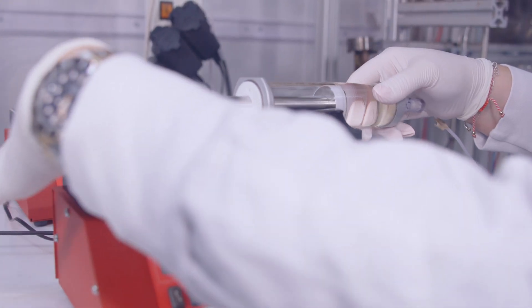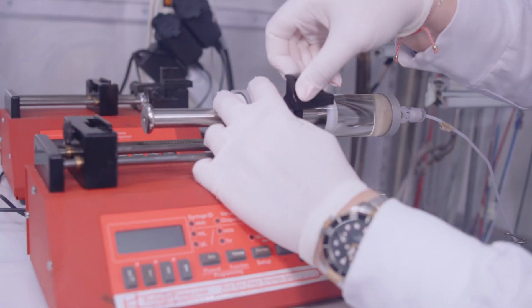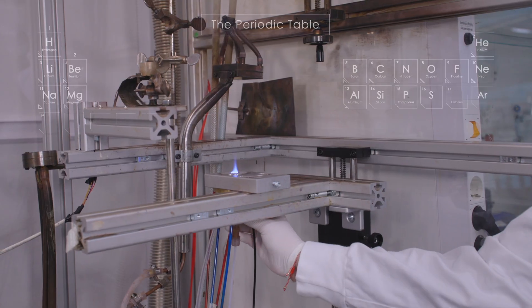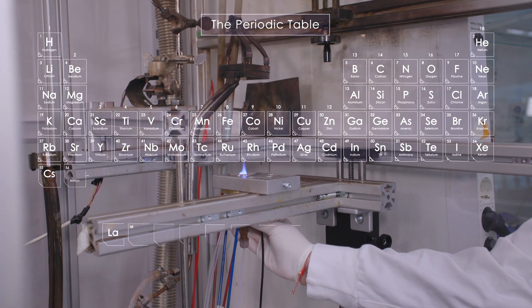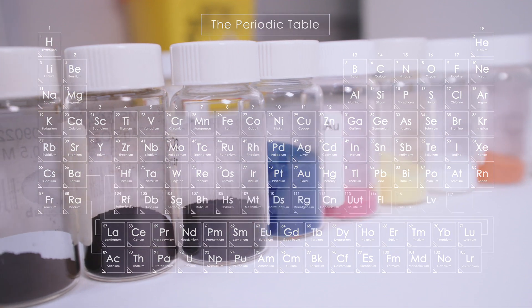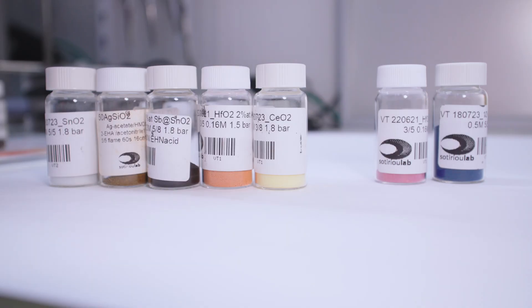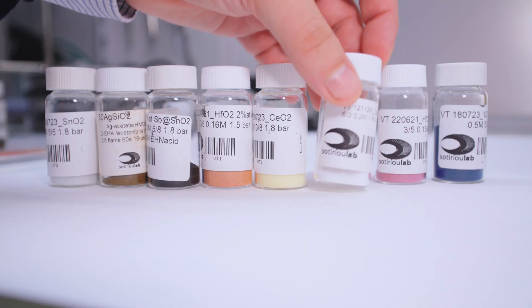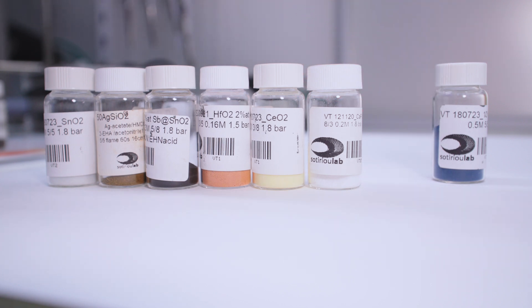Another advantage of this process is that we are very flexible in the composition of our materials. We literally look at the periodic table of elements and we choose the elements that we want to produce, and these particles might have different properties like different color or different chemical properties or electronic properties.